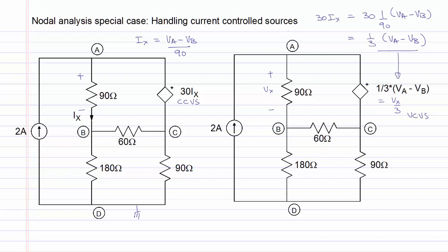The circuit on the left and on the right are identical in the sense that they will have the same current and voltage at every point in the circuit. However, the circuit on the right is easier to analyze using nodal analysis because the controlling voltage VX can be written easily in terms of nodal voltages.